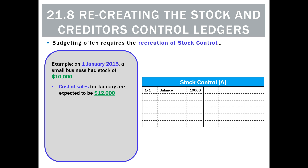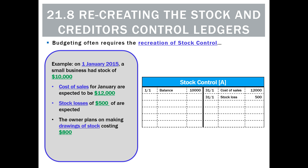We know we're going to budget to sell $12,000 of stock, so that would be a credit. We budget for stock losses of $500, so that'll lower stock control as a credit. The owner is planning on taking drawings of stock which cost $800, so that would also be a credit.